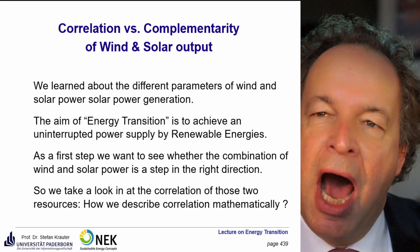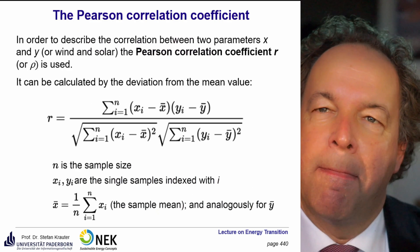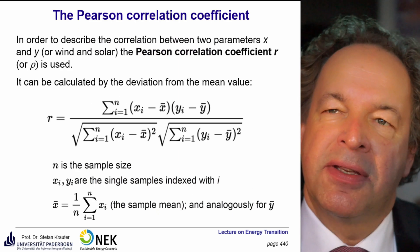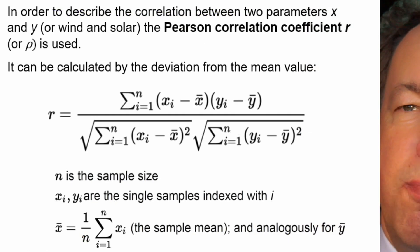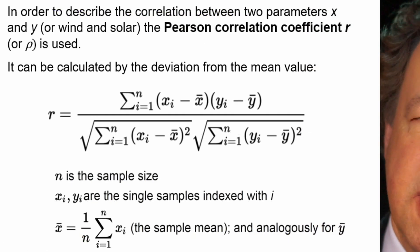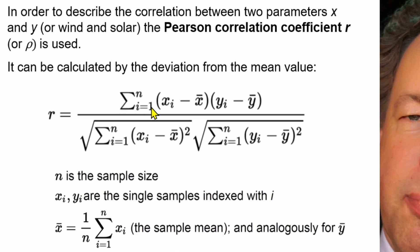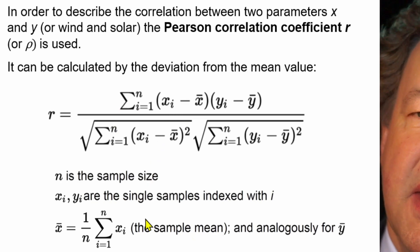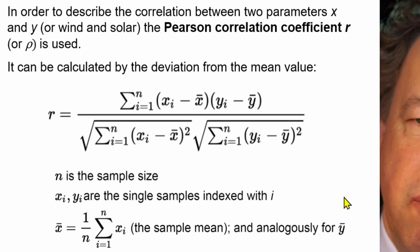First, we think about how we describe the correlation mathematically. There is a so-called Pearson correlation coefficient, abbreviated with a small r, or sometimes you find rho. We take two parameters as an example, x and y — for example, x for wind and y for solar. This is the correlation coefficient as you see here. On the top, we have the differences: x_i is the sample at index i, and then you take the difference from the sample mean — just the sum of all samples divided by the number of samples.